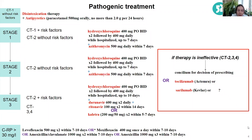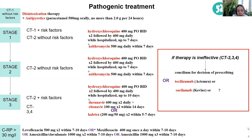At every step of this escalating step-up algorithm, when we start thinking of escalation of treatment or when assessing CT grade two findings, we discuss the possibility of initiating IL-6 treatment. In this scheme, we use azithromycin as an immune-modulating option, not as an antibacterial one.